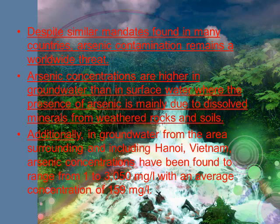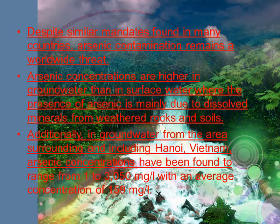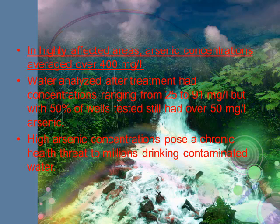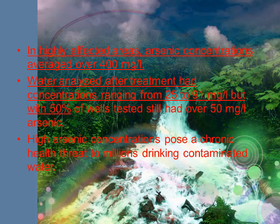Additionally, in groundwater from the areas surrounding and including Hanoi, Vietnam, arsenic concentrations have been found to range from 1 to 3,050 µg per litre, with an average concentration of 159 µg per litre. In highly affected areas, arsenic concentrations averaged over 400 µg per litre. Water analyzed after treatment had concentrations ranging from 25 to 91 µg per litre, but with 50% of wells tested still having over 50 µg per litre of arsenic. High arsenic concentrations pose a chronic health threat to millions drinking contaminated water.